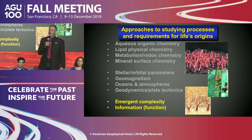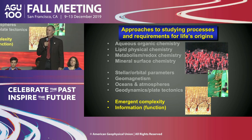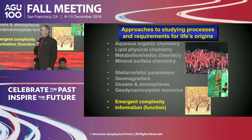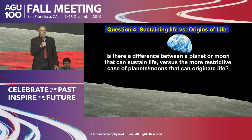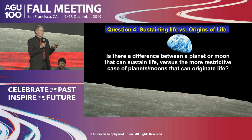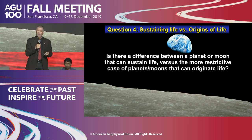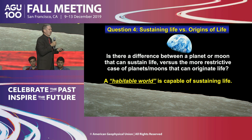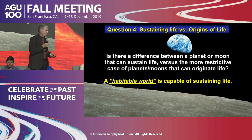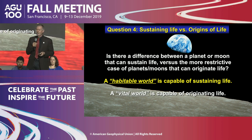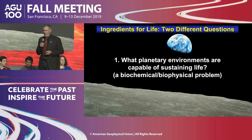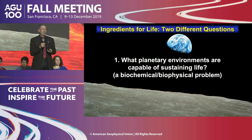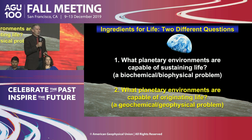I've also been interested in this idea of having an emergent system — emerging complexity. I'd like to examine the difference between a planet or moon that can sustain life versus the much more restrictive case of planets and moons that can originate life. Maybe there's already terminology I don't know, but I think of a habitable world as one that can sustain life — different from a vital world that is capable of originating life.